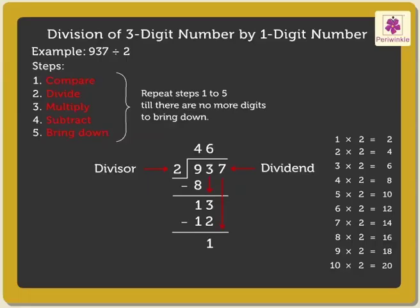Subtract 12 from 13, which is equal to 1. Lastly, bring down the next digit, that is 7. So, here we compare 17 and 2. 17 is greater than 2, so we can divide 17 by 2. Once again, using the table of 2, we find that the product equal to or less than and nearest to 17 is 16.